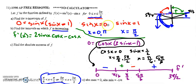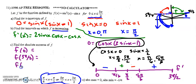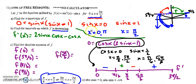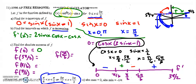Part c deals with absolute extrema. To find absolute extrema, we compare function values at the endpoints — zero and three pi over two — with function values at all critical points: pi over six, pi over two, and five pi over six. f(0): sine of zero is zero, so f(0) = 0. f(3π/2): sine of 3π/2 is negative one, so we get (-1)² minus (-1) = 1 + 1 = 2.